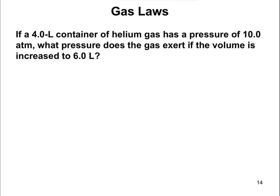In this case, it says if a 4-liter container of helium gas has a pressure of 10 atmospheres, what pressure does the gas exert if the volume is increased to 6 liters? Most problems are going to be like this — there are three numbers given, and we have to figure out the fourth.